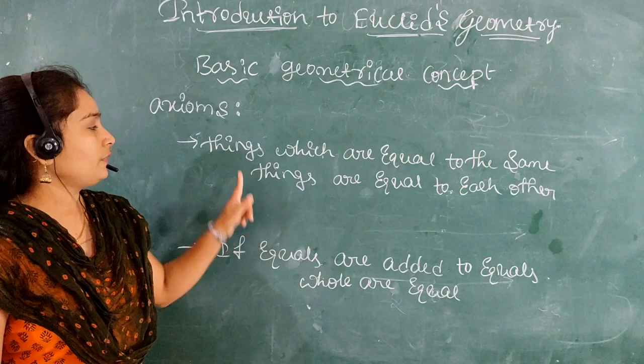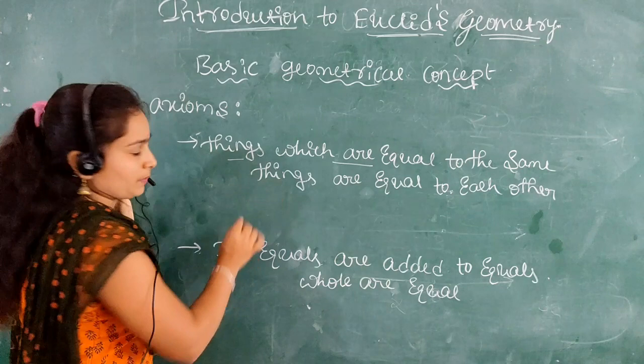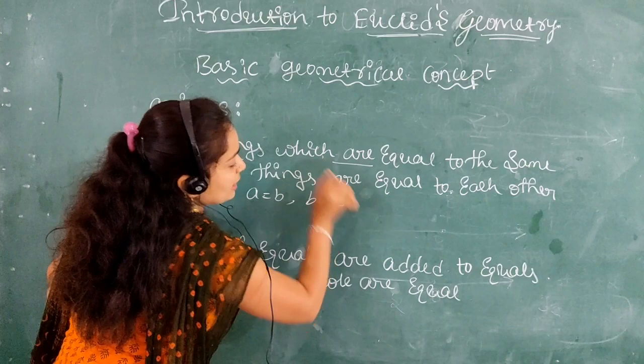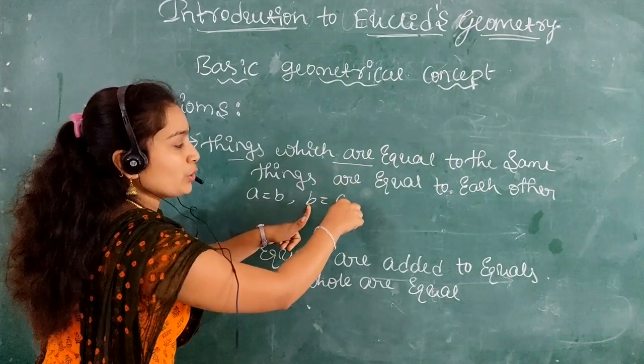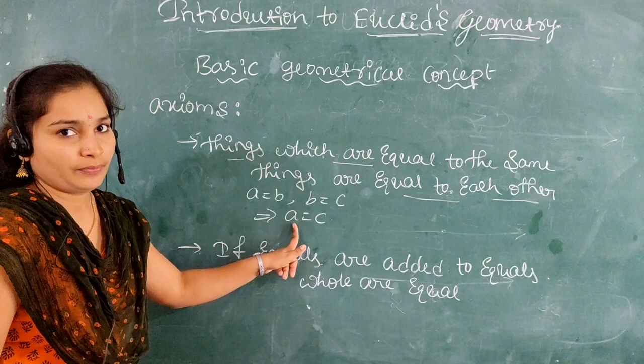The first axiom is: things which are equal to the same thing are equal to one another. For example, if A equals B and B equals C, then these two terms are equal to each other, which implies A equals C. This is the first axiom.